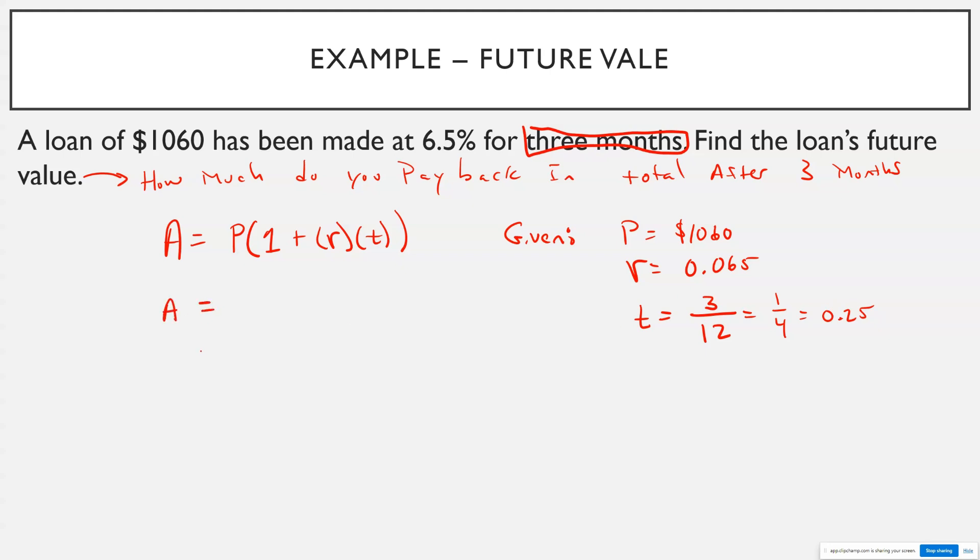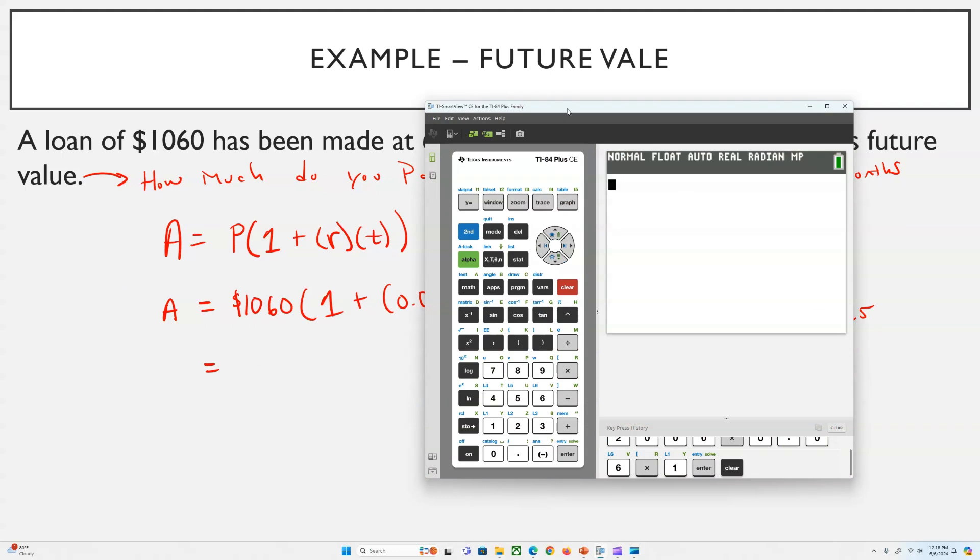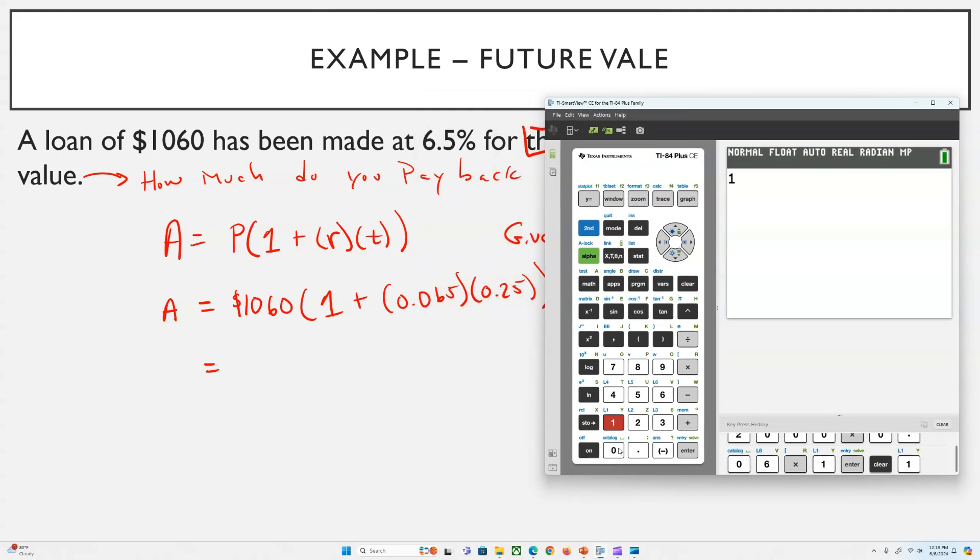So let's figure out how much we have to pay back, the loan's future value. So it's 1,060 times 1 plus my rate, which is 0.065, and then my time is 0.25. Well, let's grab our calculator. And in this problem here, we're doing 1,060 times, and then I'll start a set of parentheses, 1 plus 0.065 times 0.25, and then I'll close the parentheses. And I'll round it to two decimal points. So after three months, I'm going to have to pay back, even though I borrowed $1,060, I'm going to have to pay back $1,077.23.